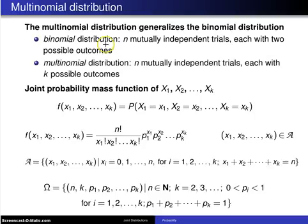The binomial distribution from back in Chapter 4 said if you have N mutually independent Bernoulli trials, each with two possible outcomes, then the binomial distribution models the number of successes in those N mutually independent Bernoulli trials.